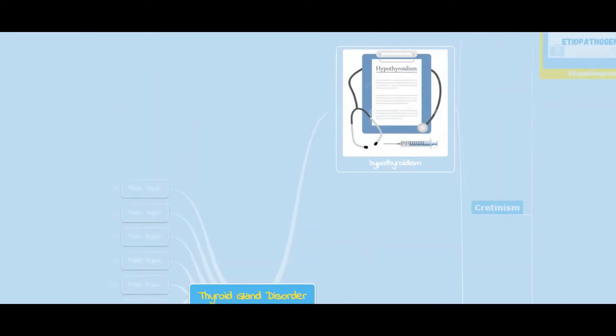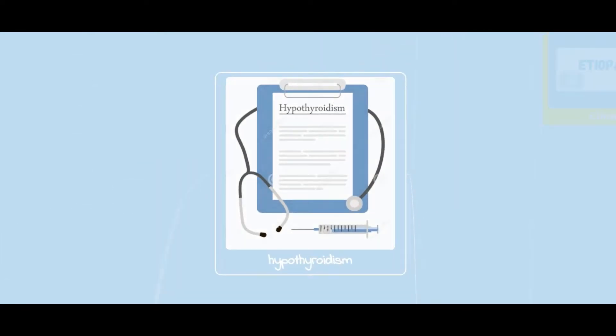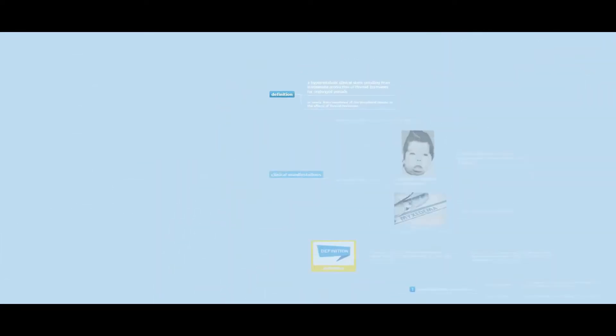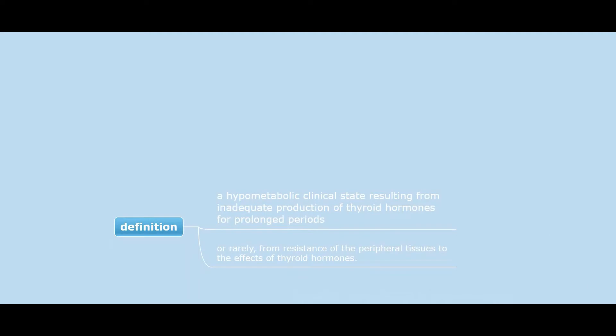Thyroid gland disorder: hypothyroidism. The hypometabolic clinical state resulting from inadequate production of thyroid hormones for prolonged periods, or rarely from resistance of the peripheral tissues to the effects of thyroid hormones.